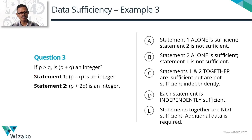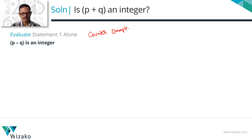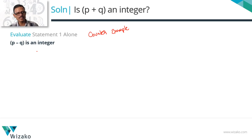Question 3: If p > q, is (p + q) an integer? Two statements are given. Go through the template first. For statement 1 — p − q is an integer — my approach is to look for a counterexample: one set of values where p − q is an integer and p + q is also an integer, and a second set where p − q is still an integer but p + q is not. That will prove statement 1 is not sufficient.